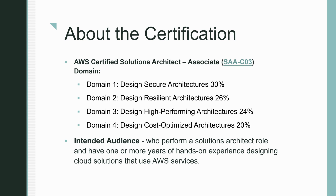This is the latest version of AWS Certified Solution Architecture Associate, called SAA-C03, and it covers four domains: design secure architecture, resilient architecture, high performing architecture, and cost optimized architecture. There is a percentage mentioned for each domain. The intended audience is a person who performs a solution architect role and has one or more years of hands-on experience designing cloud solutions using AWS services, though this is recommended but not required.